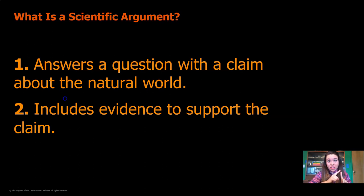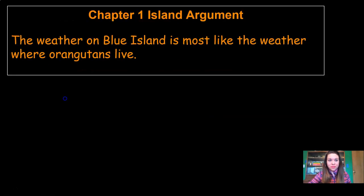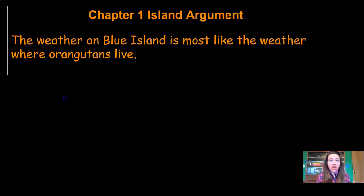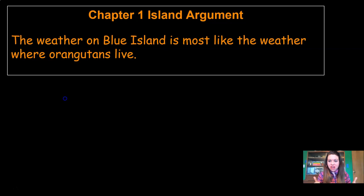We selected a claim: we claim that Blue Island is the best island for the orangutan reserve. And we have evidence to support that claim, so we're ready to make our scientific argument. Whenever you start a scientific argument, you always want to start out with your claim first — no secrets or mysteries, just tell them what you think. So here it is: the weather on Blue Island is most like the weather where orangutans live. We've shared our claim — remember that it's Claim B from that list.